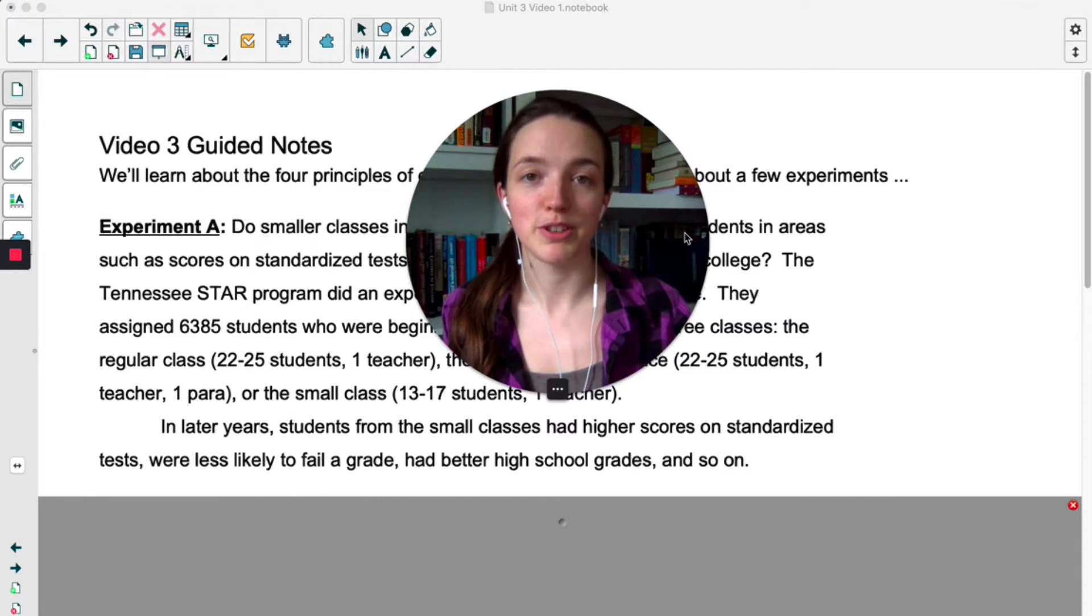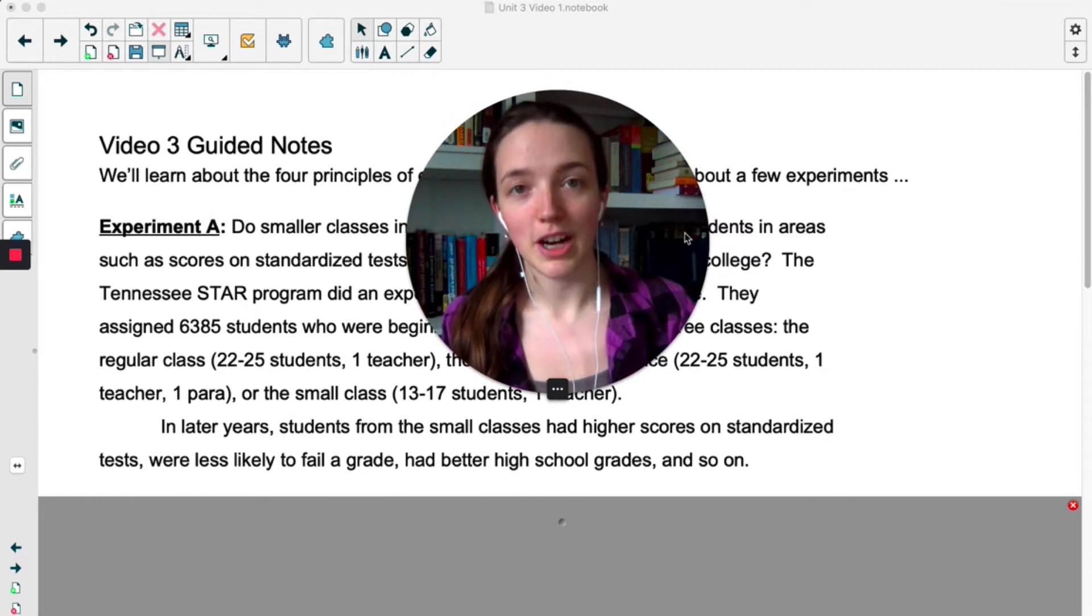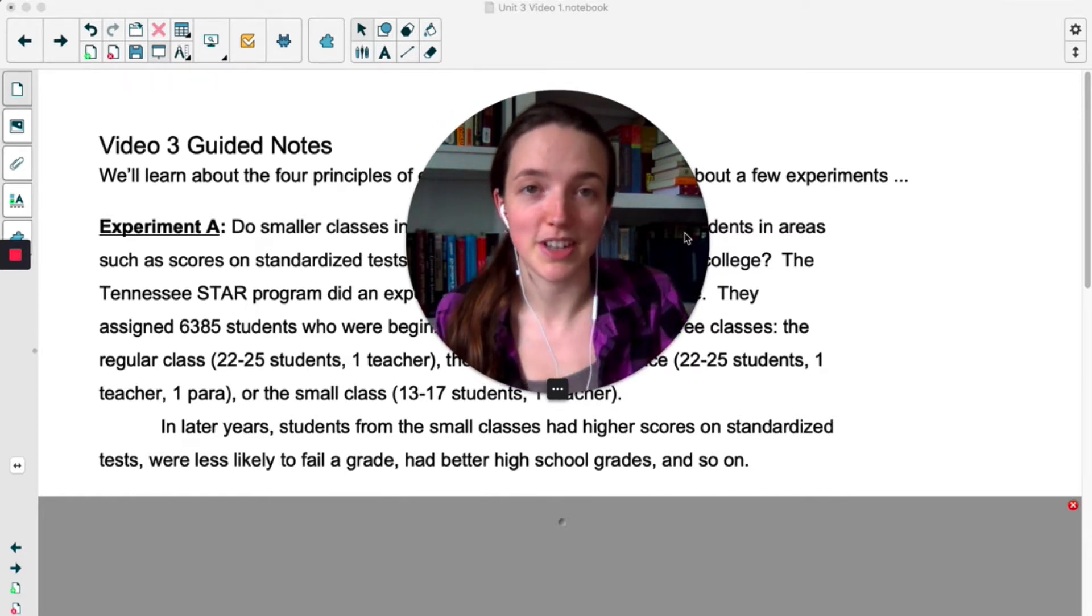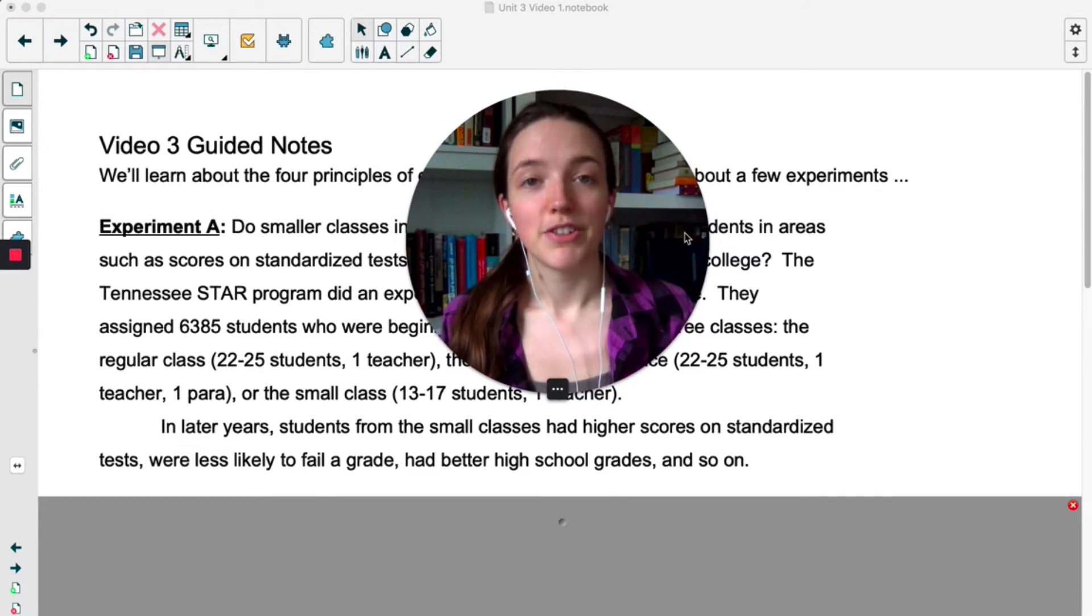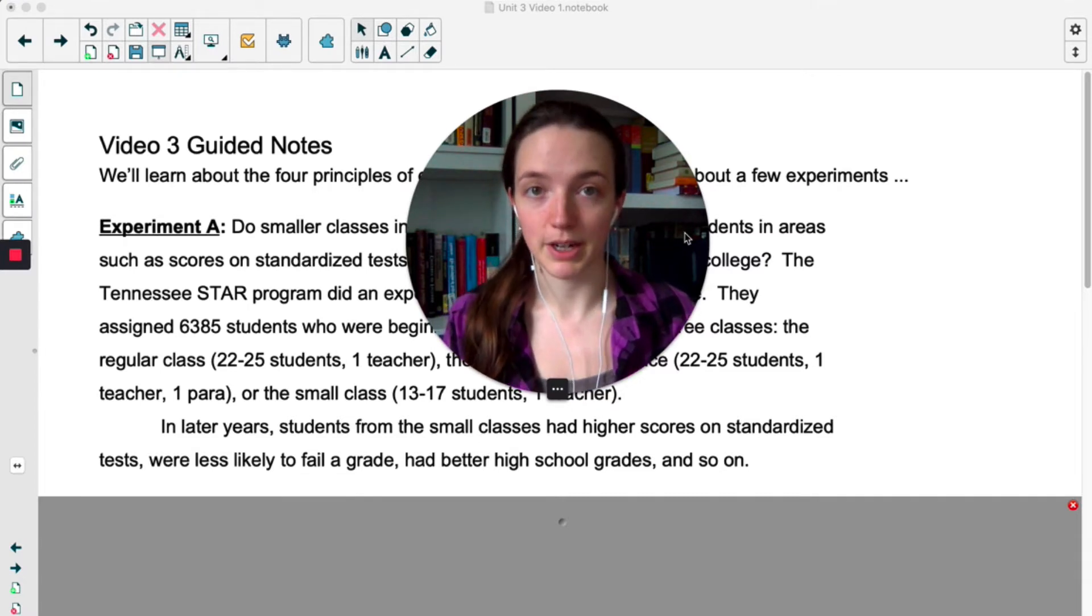Now that we've established how to get people to be in your study via a sampling method, it's time to talk about experimental design. If you're doing an observational study, there's really no design to think about because you're probably just asking people a question. But if you're doing an experiment where you're imposing some kind of treatment, it's really important that you think through the design carefully so as to minimize bias.